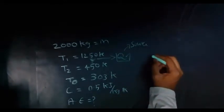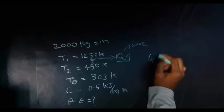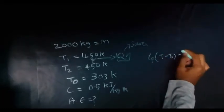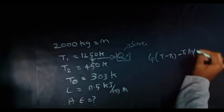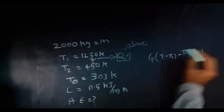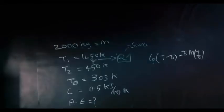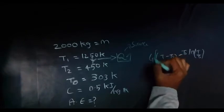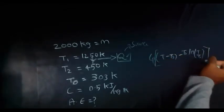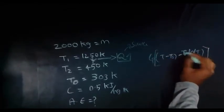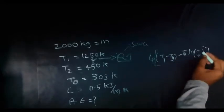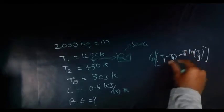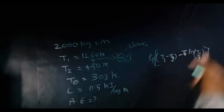That is m CP into T1 minus T2 minus T0 ln(T1/T2). Just use this. Now I am just rearranging it in order to avoid confusion. This is T0, this is T1, and this is T2. Just for the sake of remembrance.